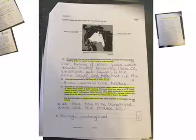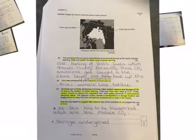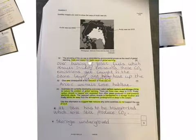Question number two was looking at satellite images of Arctic seas. The shrinking of the ice caps is interpreted by environmental groups as a result of global warming. State and explain the main cause of global warming. Global warming is essentially the overburning of fossil fuels - coal and gas - and it results in large amounts of CO2 emissions. When they are burned to power our electricity and cars, they release CO2. These CO2 emissions get caught up in the ozone layer and heat up the atmosphere. They essentially cannot escape and heat up the atmosphere.